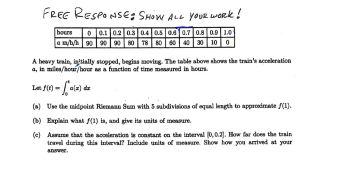Here we have our table. It says a heavy train initially stopped begins moving, so initially stopped means that our initial velocity v sub zero equals zero. That's important. The table above shows the train's acceleration in miles per hour per hour as a function of time measured in hours. We have let f(t) equal the integral from zero to t of a(x) dx, and then we have these three problems a, b, and c.